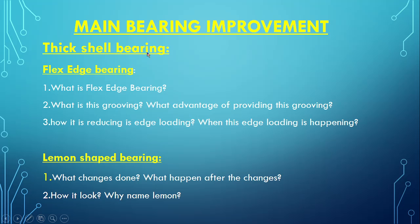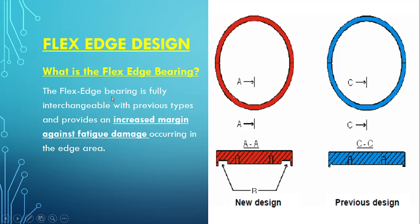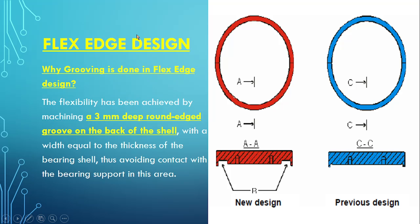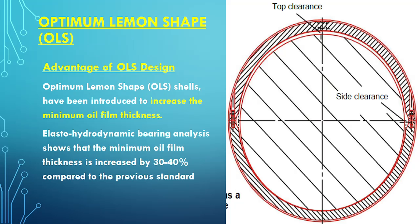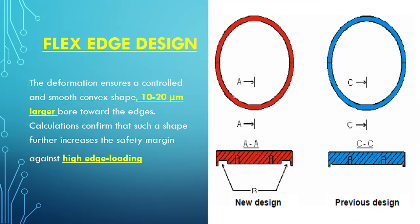We will discuss flex edge bearing and lemon shape bearing. These are two names given based on their improvement. We will see what is the flex edge design, why it is called flex edge, why the grooving is done in the flex edge and how it is reducing the edge loading. After that we will see about the optimum lemon shape design, why it is called lemon shape, why it is called optimum, and how it is reducing fatigue.